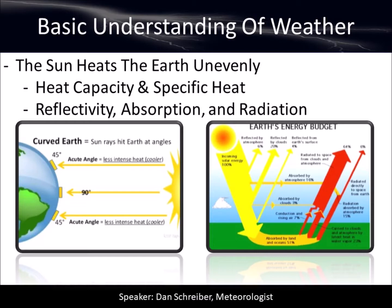Water, land, and just about every element out there absorbs and reflects heat a little bit differently. For instance, say you go to the beach and the ocean water is 70 degrees but the air temperature is 95 degrees. You park your car, go for a dip — it's refreshing, 70-degree water. You go back to your car and touch it — you burn your hand. Water absorbs heat more slowly, so it stays cooler. Your car, on the other hand, can absorb and lose heat very quickly.